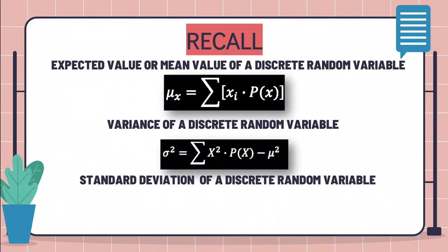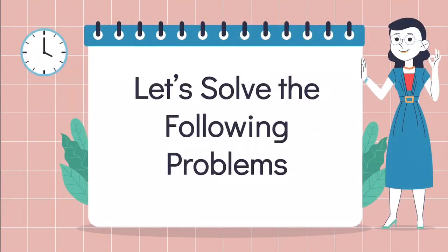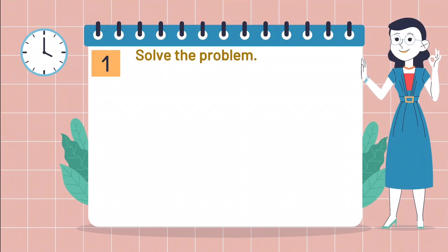And lastly, we use this formula to get the standard deviation of a discrete random variable. This is just simply the square root value of our variance. After refreshing our minds by recalling important concepts, we can now begin solving the following problems. You may pause and play this video to test your knowledge as we go in depth of this lesson.